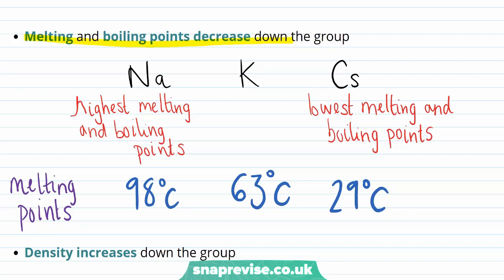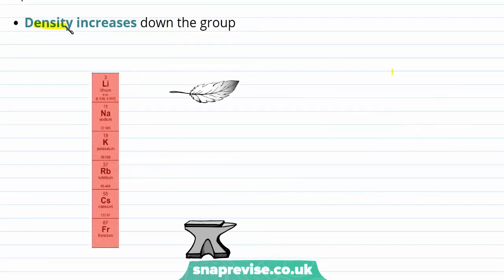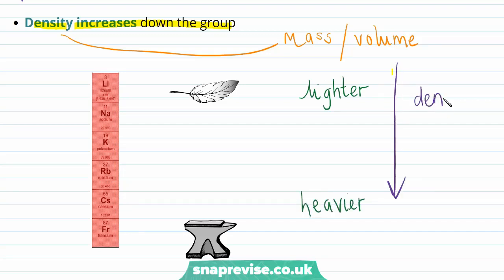Rubidium's melting point will be intermediate between potassium and caesium. The final trend we're going to talk about is density, which increases as you travel down the group. Density is defined as mass divided by volume, so what this means is that elements at the top of Group 1 are lighter and elements at the bottom are heavier, with density increasing from top to bottom.